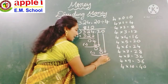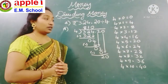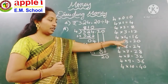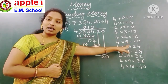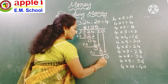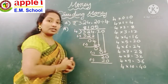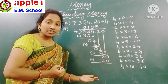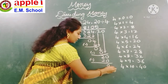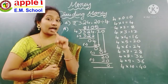Next, bring down the next digit. 4 fives are 20. Do the subtraction: 20 minus 20 is 0.